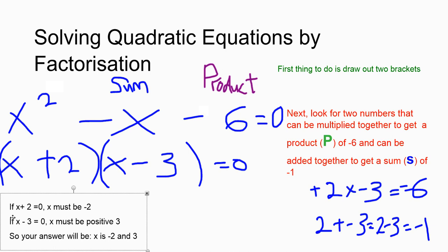Now, if x plus 2 is 0, x must be negative 2. And if x minus 3 is 0, x must be positive 3. So, your final answer will be x is negative 2 and x is 3.